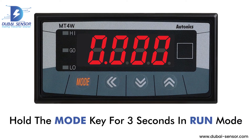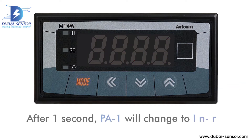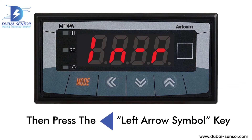Hold the mode key for 3 seconds in run mode. After 1 second, PA1 will change to INR. Then press the left arrow symbol key.